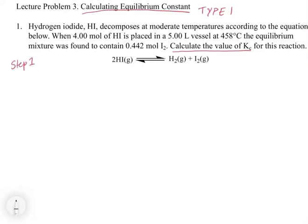Writing out the K equation applies whether it's type 1 or type 2. In this case, K is equal to the concentration of H₂ times the concentration of I₂, divided by the concentration of HI squared. It's really important to understand that these concentrations are the values at equilibrium, because that's what the equilibrium constant is — the ratio of concentrations at equilibrium. All values going into the K expression are equilibrium values, and we're going to get some initial values and some equilibrium values, so we must distinguish between them.